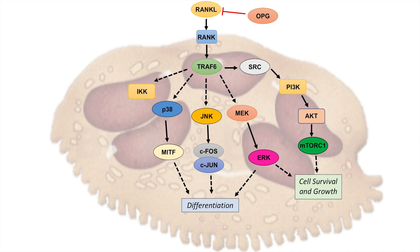Finally, TRAF6 can also activate IKK and NF-κB signaling, which aids in osteoclast precursor differentiation to form a mature osteoclast. This entire pathway leads to the differentiation of osteoclast precursors, the fusion of several osteoclast precursors to form a single mature osteoclast, and the activation of the osteoclast to facilitate bone reabsorption.